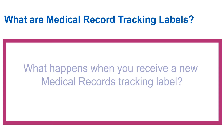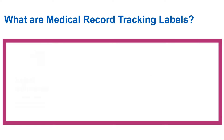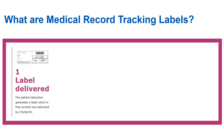I will now discuss what a medical record tracking label is and what you need to do once you receive a label at your practice. If a patient has changed their GP practice, the paper medical record will follow them. If you receive a tracking label, this means the patient has been deducted from your practice and has registered at another practice. The patient deduction generates a label which is printed and delivered to you via CitySprint.